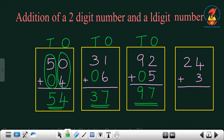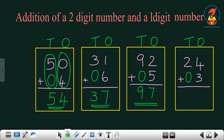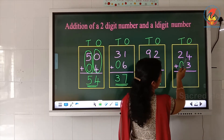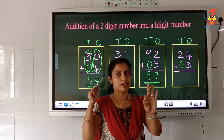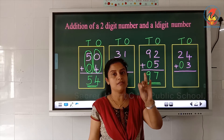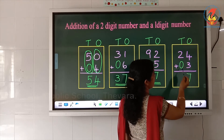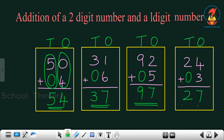24 plus 3. First write the place value: ones place, tens place. Is there any number in the tens place? There is no number, so we have to put 0. Then we have to add the numbers in the ones place — which are 4 and 3. How will you do 4 plus 3? 3 in the hand and 4 in the mind — after 4: 5, 6, 7. So we write 7 in the ones place. Which are the numbers in the tens place? 2 and 0. What is 2 plus 0? 2 plus 0 is 2. The answer is 27.